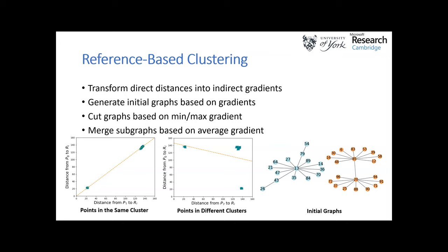We looked to extract indirect information to evaluate how close two points truly were. We plotted the distance from these points to other reference points in the dataset. When comparing points within the same cluster, plotted points appear on the y=x line, so the trend line gradient should be close to 1. When looking at points from different clusters, the gradient starts to decrease. We can use this gradient as a value to indirectly determine how similar two points are, and based on this we could generate a set of initial graphs.